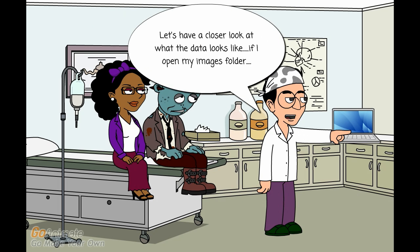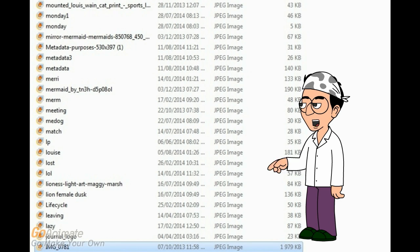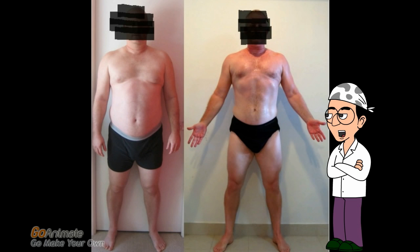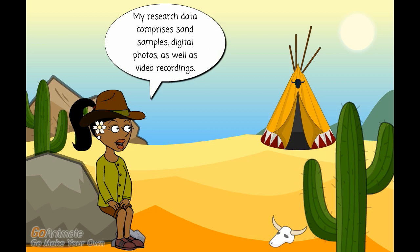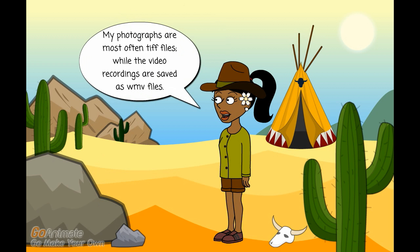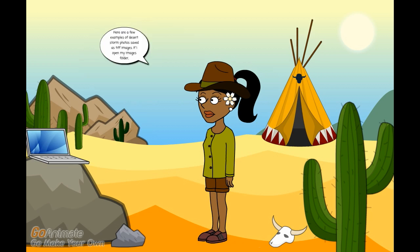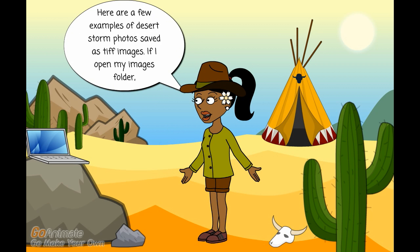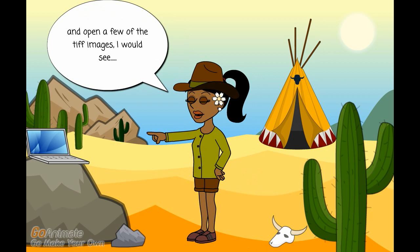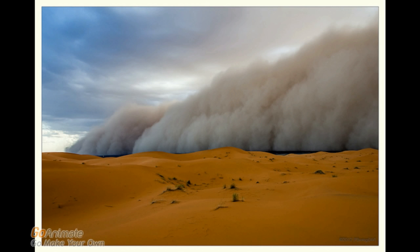Let's have a closer look at what the data looks like. If I open my images folder and click on any one of the JPEG image icons, it would show a JPEG image — in this case, a full length photo of one of my patients. The image portrays the patient at two different phases of the trial. My research data comprises sand samples, digital photos, as well as video recordings. My photographs are most often TIFF files, while the video recordings are saved as WMV files. Here are a few examples of desert storm photos saved as TIFF images.